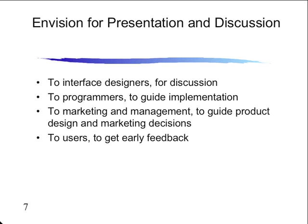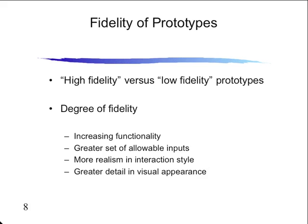The type of prototype it represents would be for envisioning, presentation, and discussion. Also, for those who haven't looked at the syllabus, there were no class presentations this term. You have the midterm, the final, and the project, but no presentation. Regarding fidelity: high fidelity versus low fidelity prototyping — the degrees of fidelity tell us the functionality. When we go from low to high, we have an increase in functionality, more implementation, a greater set of allowable inputs, more realism in the interaction, and greater detail of visual appearance.